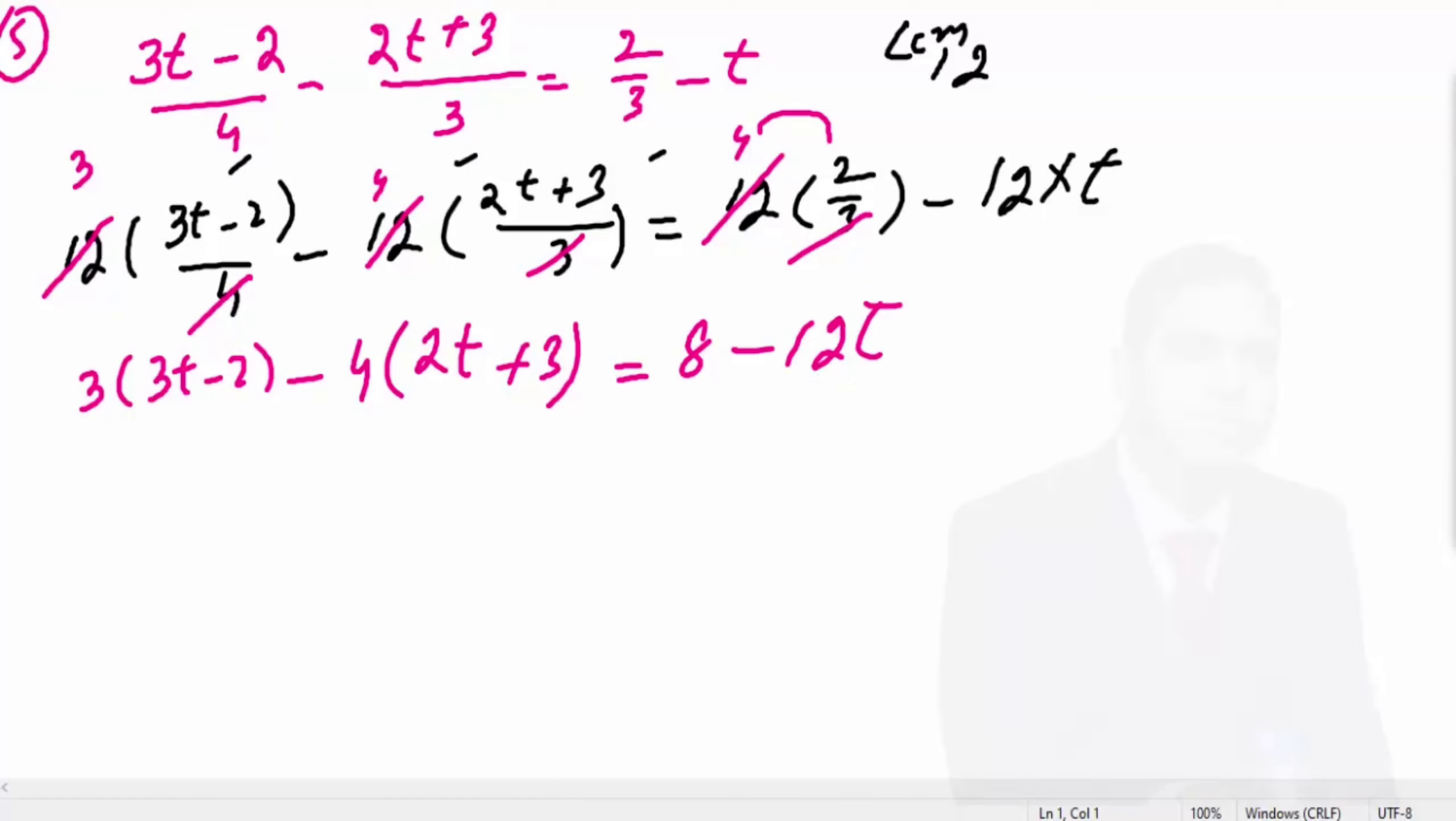Now carefully simplify. 3 times 3t is 9t, 3 times 2 is minus 6. Here this is minus, this is plus, so here it becomes minus.